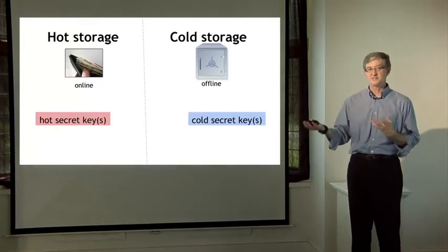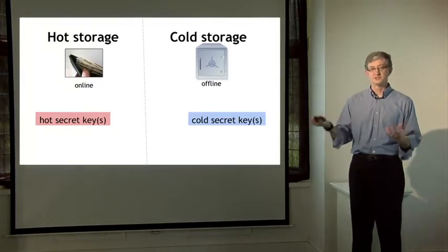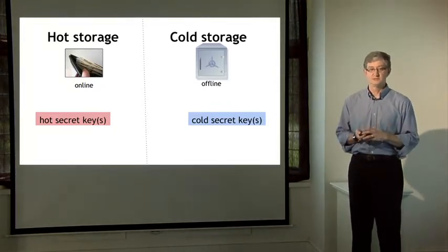You need to have separate private keys for hot versus cold storage. Each side needs to know the addresses that the other side is using, because you want to be able to transfer money back and forth. Each side knows its own secret keys, and it also knows the addresses at which the other side will accept transfers, and that lets you do transfers back and forth.